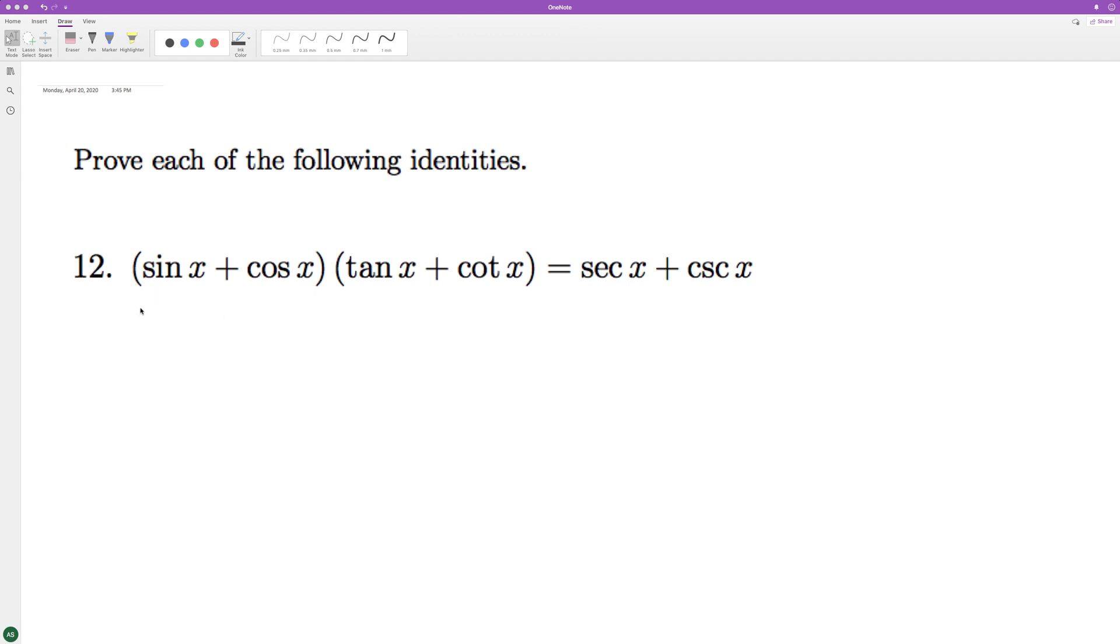We're proving this identity. So what we'll do here is FOIL this out. Again, just make sure though that tangent is equal to sine of x over cosine of x, and cotangent is equal to cosine of x over sine of x.